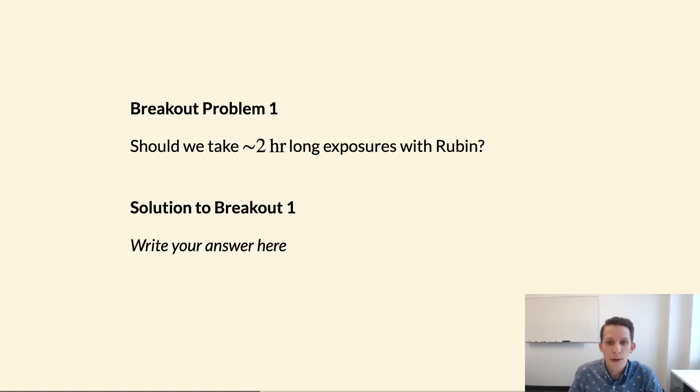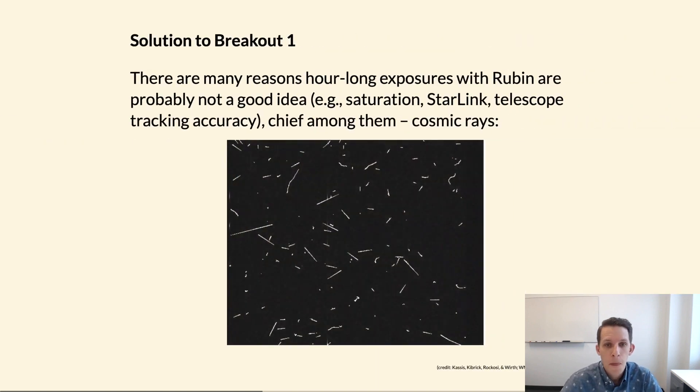All right, so shall we take these very long exposures? There's actually several reasons why hour or hours long exposures with a telescope like the Rubin Observatory are probably not a great idea. Things like saturating your bright stars, having satellite streaks from Starlink, the accuracy of your telescope in terms of being able to track over time periods of several hours.